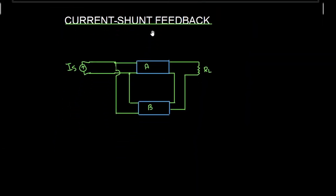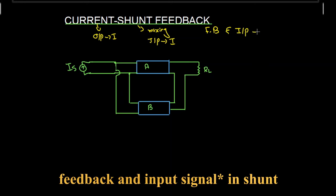Next is the current shunt feedback amplifier. The first term indicates the sampling, so at the output we are going to have current. The second term indicates the mixing, and because we have shunt mixing, it is also called current mixing because currents are added or subtracted in parallel. So the input component is also going to be current, and the feedback network and input network are going to be connected in shunt. This is the current shunt feedback amplifier with current sampling and shunt mixing.